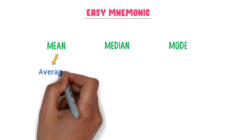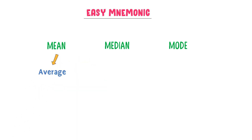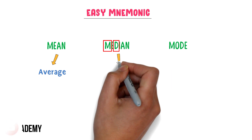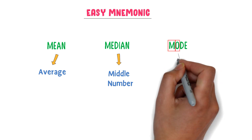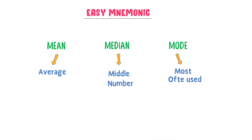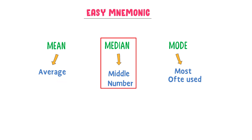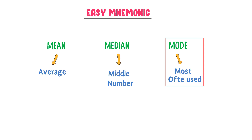Note it down that the mean and the average are the same things. Secondly, in the median, there are two words M and D which means middle number. Thirdly, in the mode, there are two words M and O which means most often used. So remember: mean is the average number, median is the middle number, and mode is the most often used number.